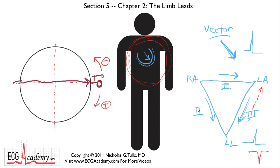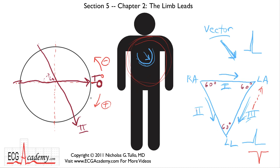Now Lead II — how do we remember that Lead II goes from right arm to left leg? I always remind people that in English we read from left to right and top to bottom. So when you draw the second ECG lead in, you draw it from left to right and top to bottom, but it has to divide this circle into six parts because there are three leads and they all bisect the circle. You draw it 60 degrees above the horizontal, because there are 60 degrees in every corner of an equilateral triangle. So Lead II is drawn at 60 degrees up from the horizontal, going from the right arm to the left leg, dividing this circle into six equal parts.